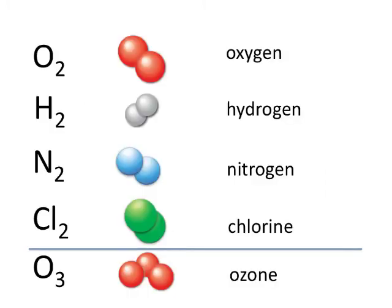Here are some of these diatomic molecules. You have oxygen, or oxygen gas, which is O2 — we're using red to represent oxygen here. Hydrogen is also diatomic: H2, shown in white. Nitrogen is often represented by the colour blue, so N2.